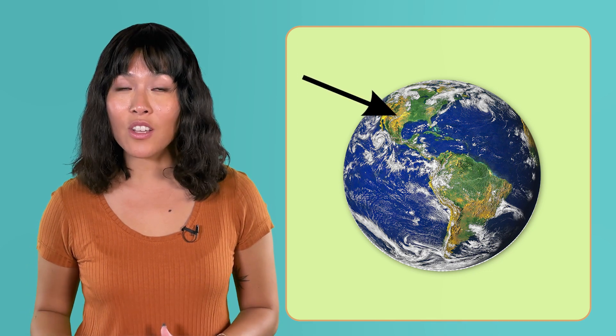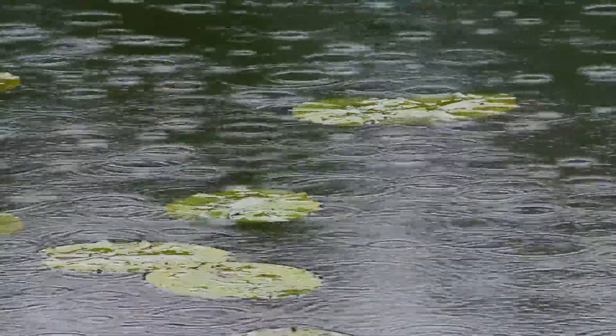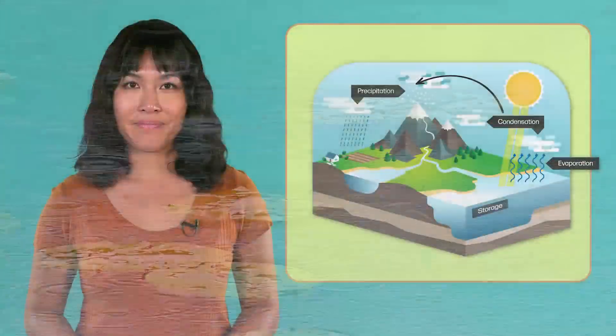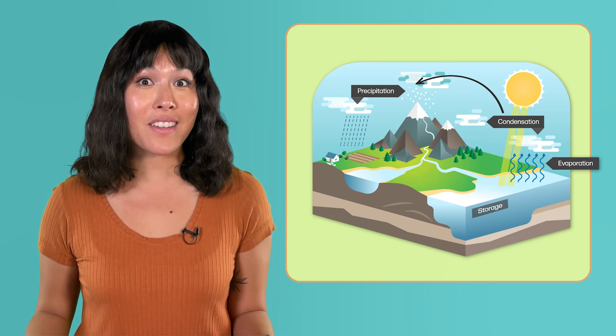There are basically two places this water can fall on Earth's surface. Pause the video here and record your thinking in your guided notes. The water that falls during precipitation can fall onto land or into an existing body of water. The precipitation that falls into an existing body of water, like an ocean, lake, or river, goes right back into storage. Then it might go through evaporation, condensation, and precipitation again.